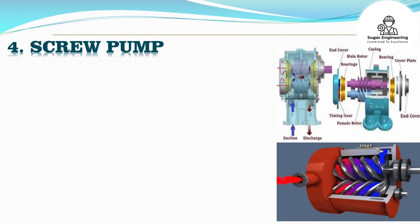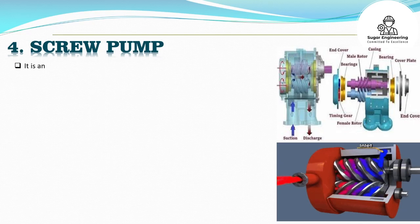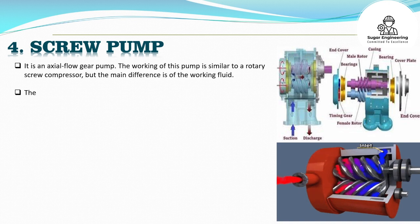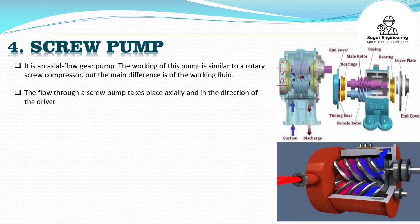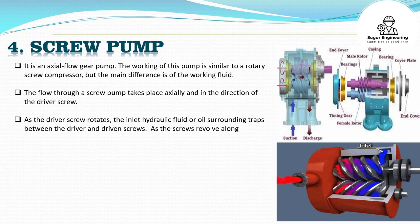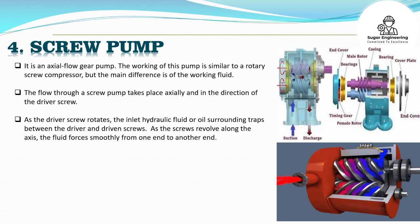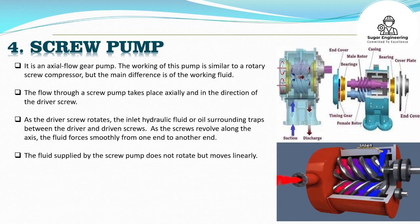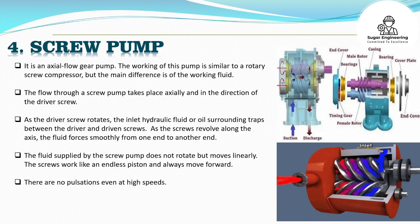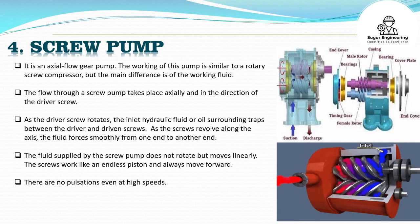A screw pump is an axial flow gear pump. The working of this pump is similar to a rotary screw compressor, but the main difference is the working fluid. The flow through a screw pump takes place axially and in the direction of the driver screw. As the driver screw rotates, the inlet hydraulic fluid or oil surrounding it traps between the driver and driven screws. As the screws revolve along the axis, the fluid forces smoothly from one end to another. The fluid supplied by the screw pump does not rotate but moves linearly. The screws work like an endless piston and always move forward. There are no pulsations even at high speeds.